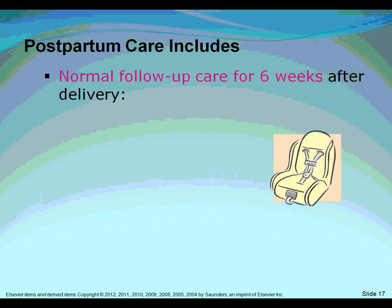The delivery includes admission to the hospital with admitting history and physical, management of uncomplicated labor, and vaginal or cesarean delivery. Complications are coded separately — anything arising outside of normal delivery may be reported separately with descriptions and diagnosis codes. The hospital is also paid under an all-inclusive rate, with a payment made to the provider and a separate payment made to the hospital. Postpartum care covers normal follow-up for up to six weeks after delivery, including hospital and office visits.